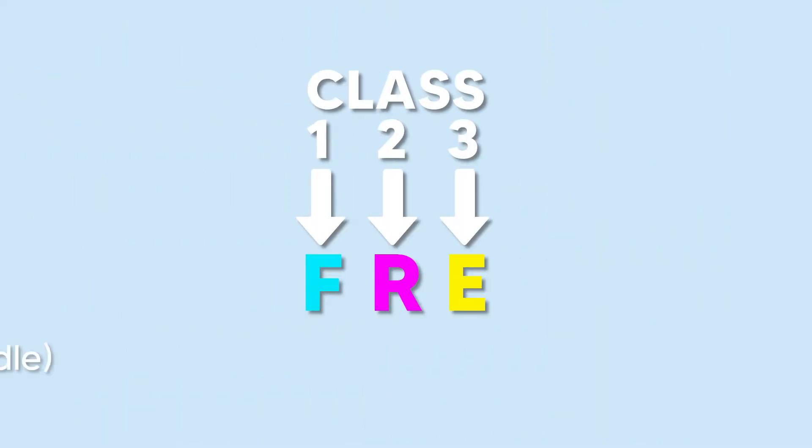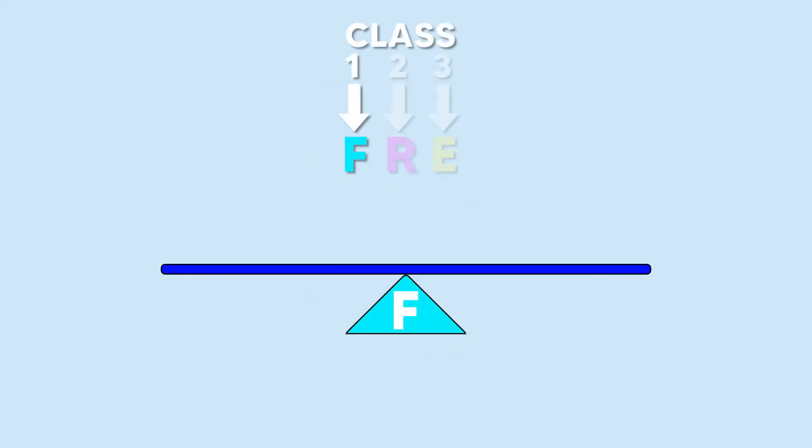Now to remember the location and the classifications of these levers, we use the mnemonic FRE. These letters tell you which component is located in the middle of each lever. The F, since it's in the first position, refers to class 1 levers and tells us that the fulcrum is located in the middle. With the fulcrum in the middle, we know that the other components must go to the side, so we'll put the resistance here and the effort here.